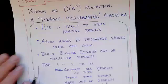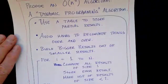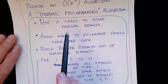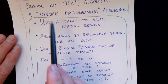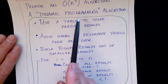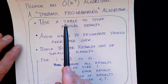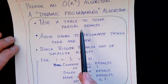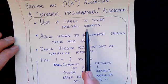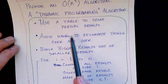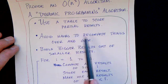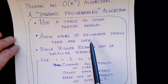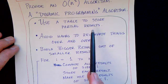I'm gonna just quickly sketch out this algorithm. It's an example of a dynamic programming algorithm. And the idea behind dynamic programming is that you build a table to store partial results, and then this allows you to avoid having to recompute the partial results over and over again.